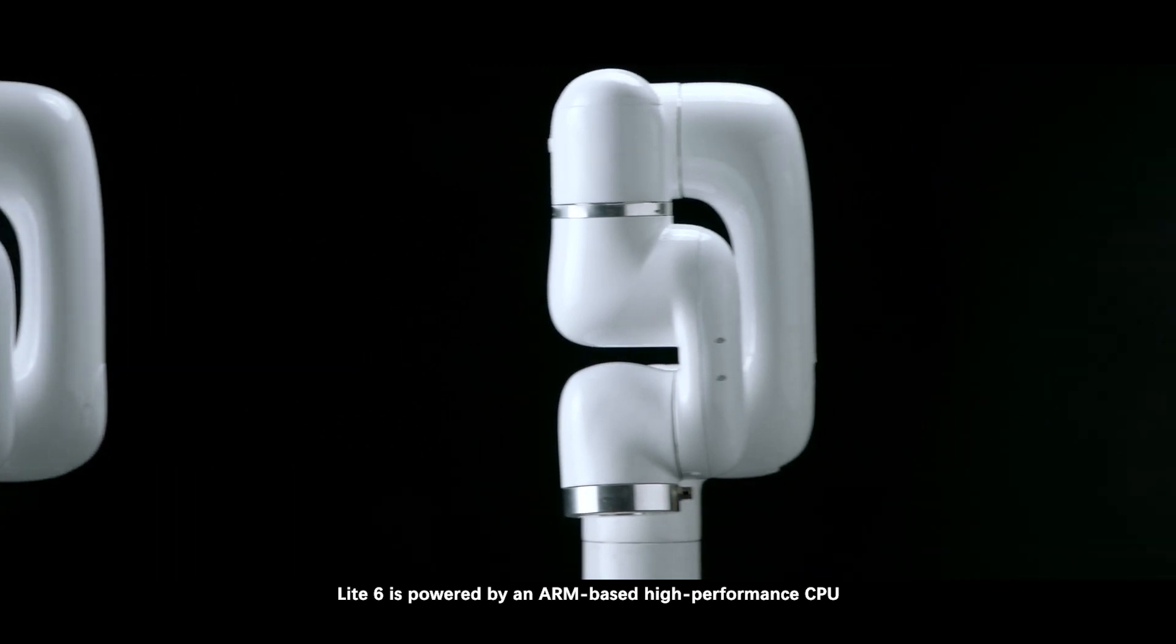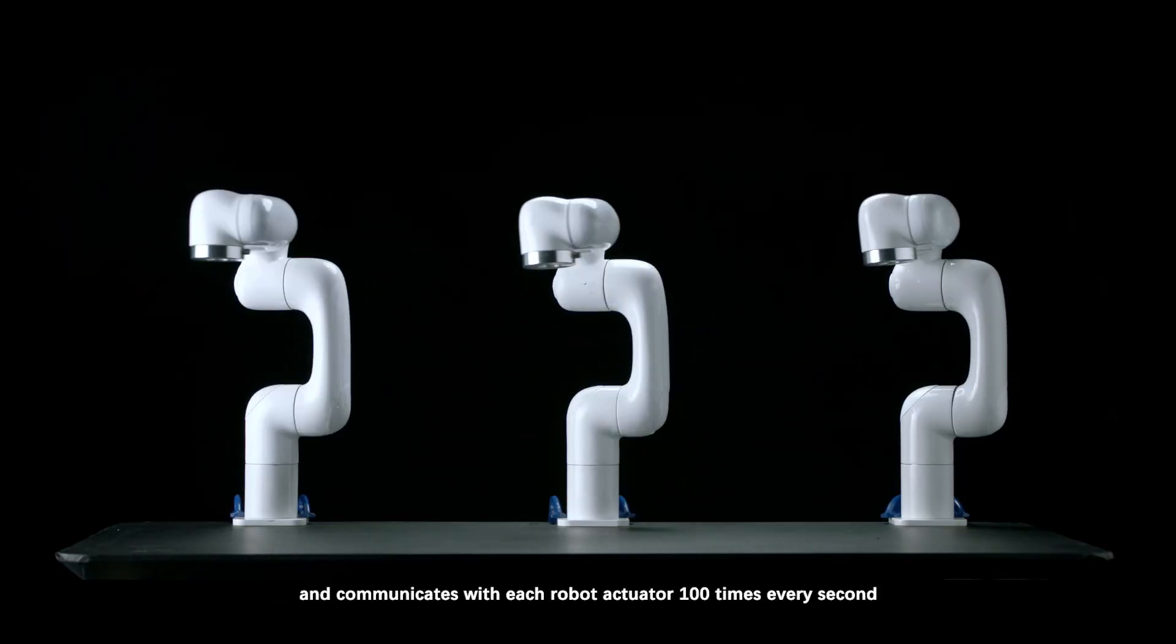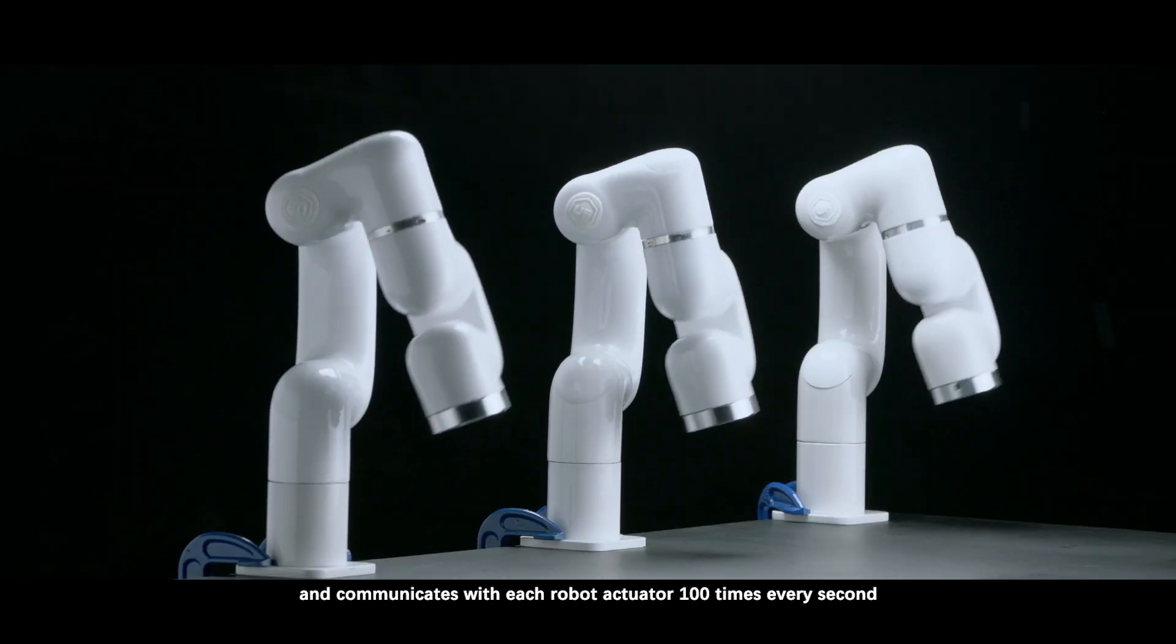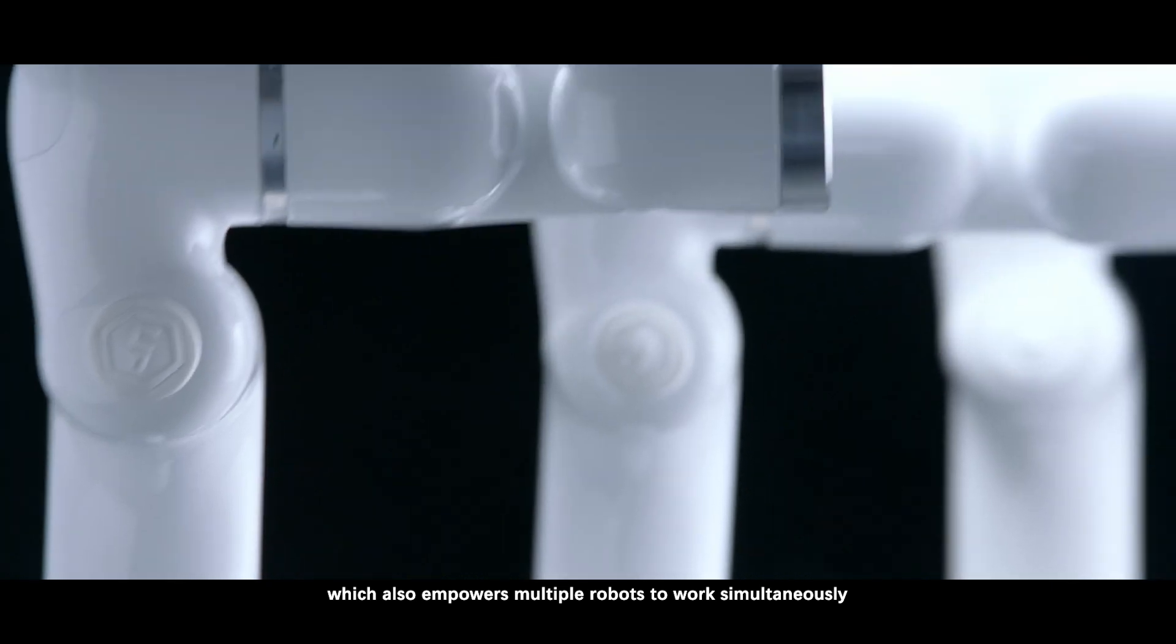Light6 is powered by an ARM-based high-performance CPU and communicates with each robot actuator 100 times every second, which also empowers multiple robots to work simultaneously.